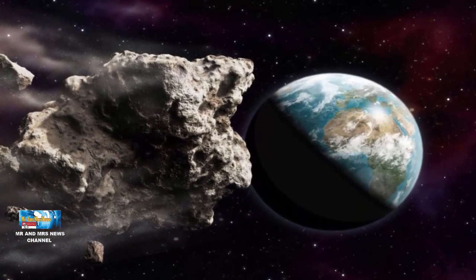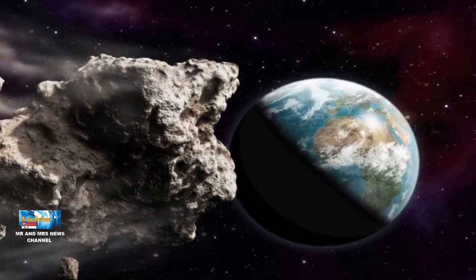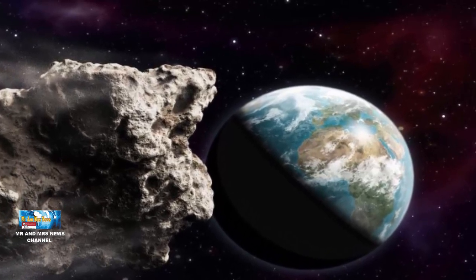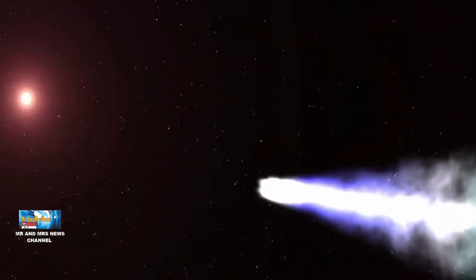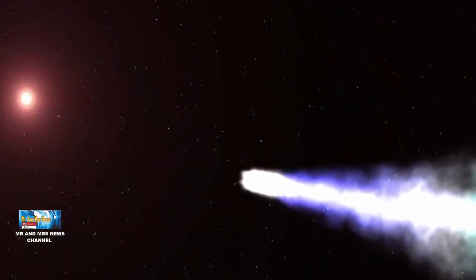Karena memiliki ukuran sangat besar, batuan tersebut pernah dikira sebagai planet kerdil. Tetapi, pengamatan baru menunjukkan bahwa objek tersebut memiliki ekor yang bersinar di mana itu adalah indikator jelas dari komet.